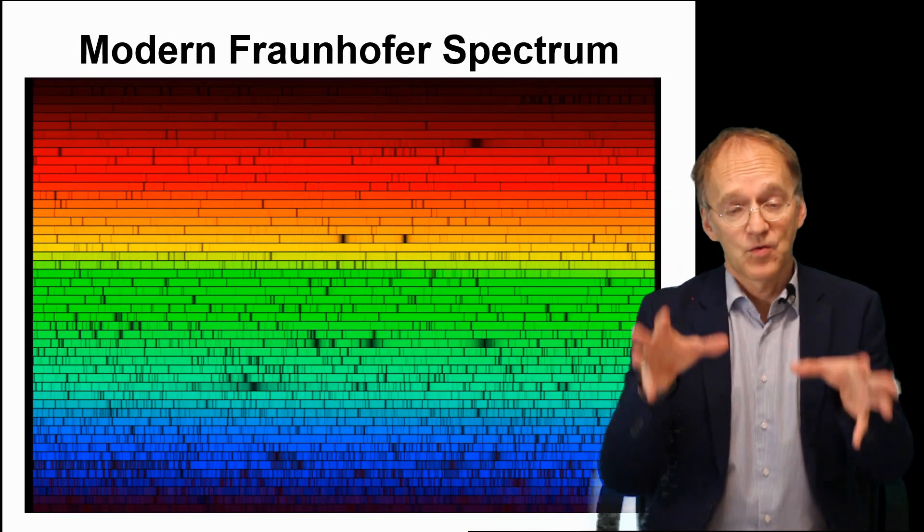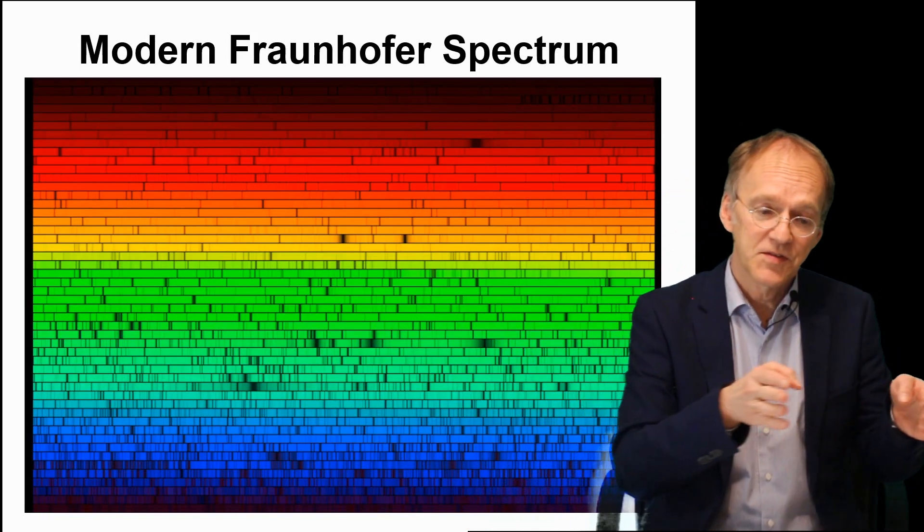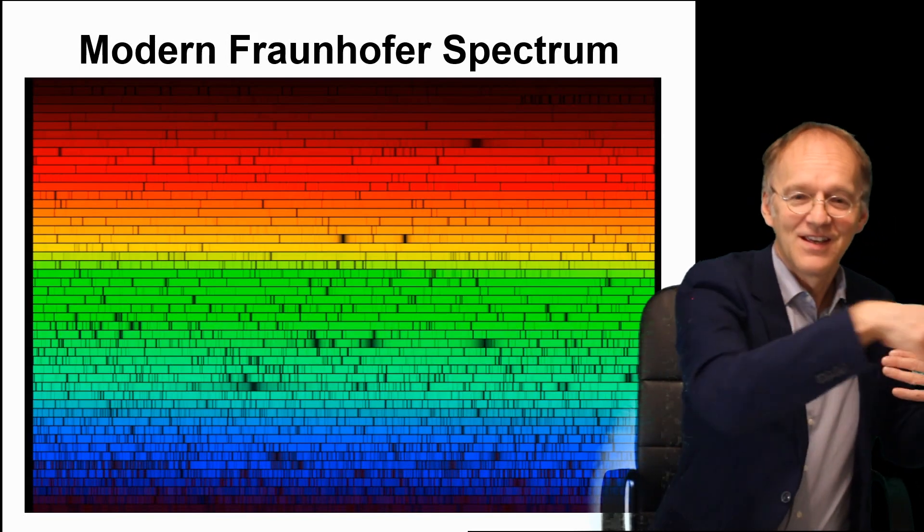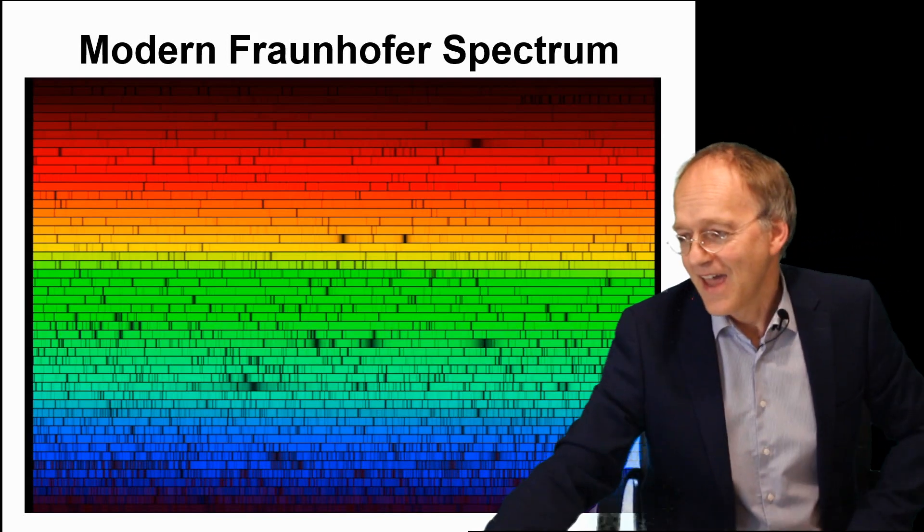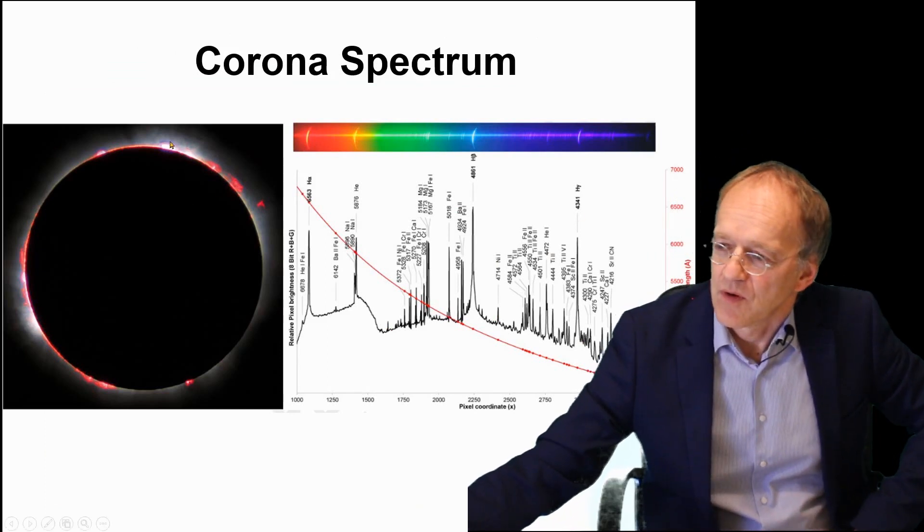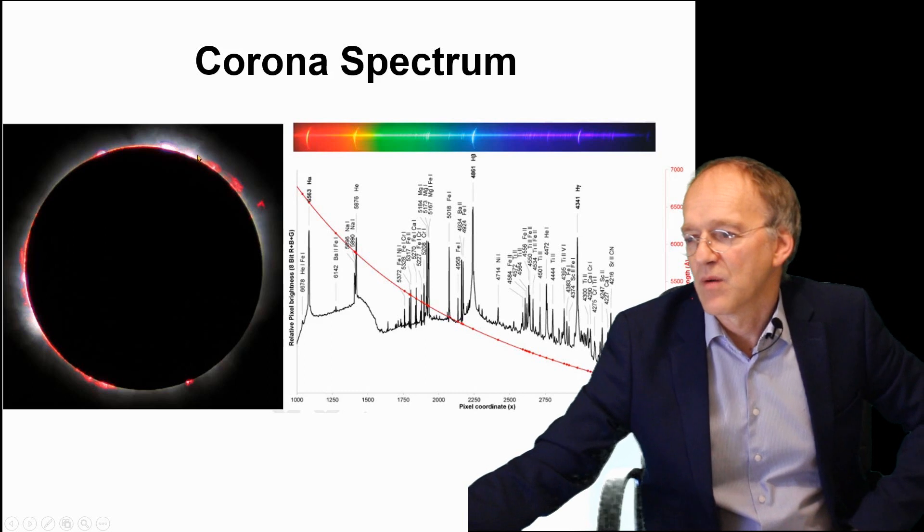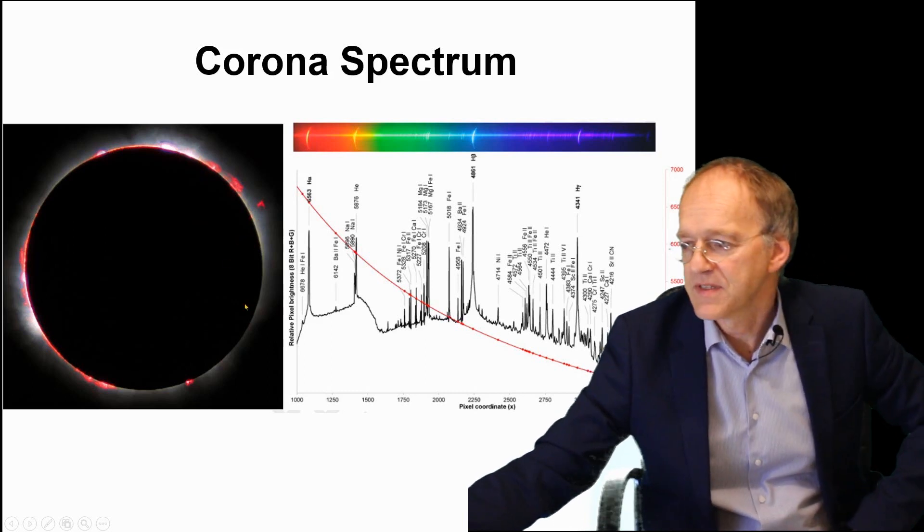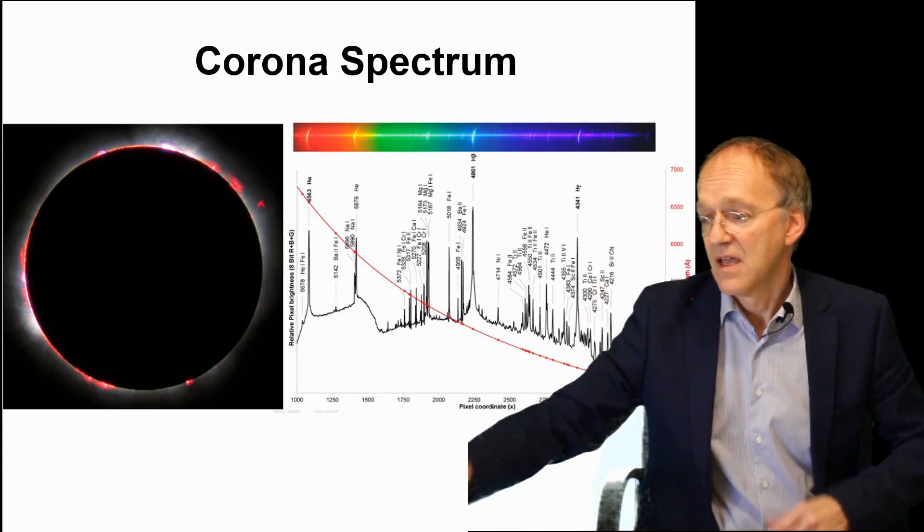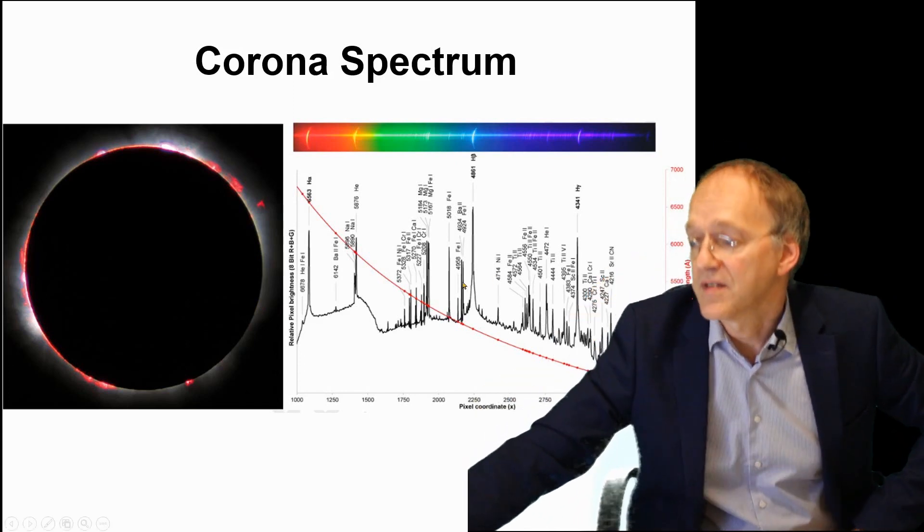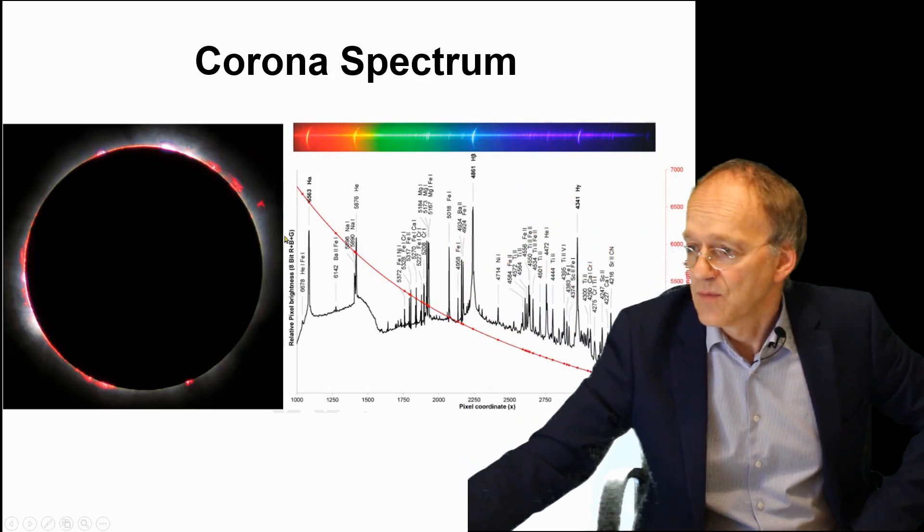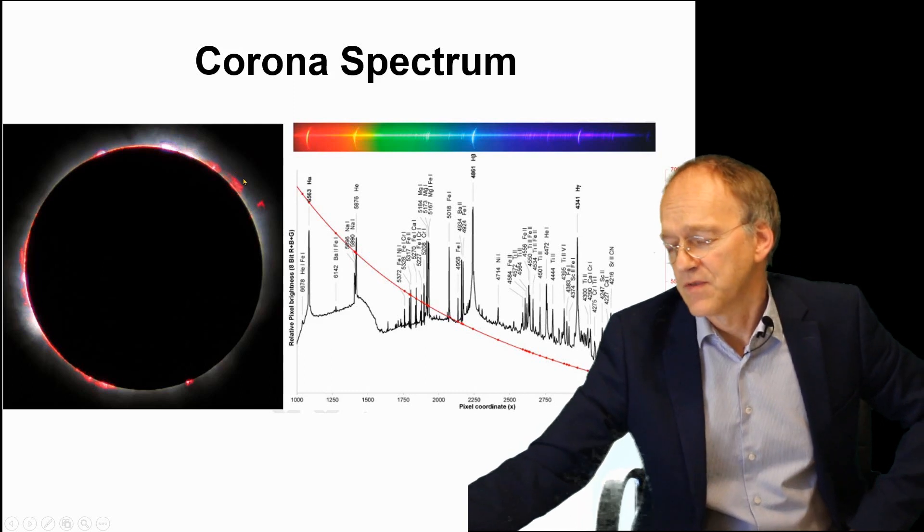But you don't have only the Fraunhofer spectrum. You can also look laterally at the atoms and see what they scatter to the side. That's what you can observe with a spectrum of the corona or the chromosphere. This picture is taken during a solar eclipse, and then you see deflected at right angles this positive spectrum with given lines that identify certain atoms sitting over the solar atmosphere.